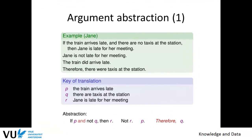To formalize this, we use a key to translate parts of the knowledge into propositions. 'A train arrives late' can be true or false — let's call it P. 'Taxis are at the station' is true or false — call it Q. 'Jane is late for the meeting' is true or false — call it R. We abbreviate facts from the story into propositions. The knowledge that if the train arrives late and there are no taxis then Jane is late becomes: P and not Q implies R.